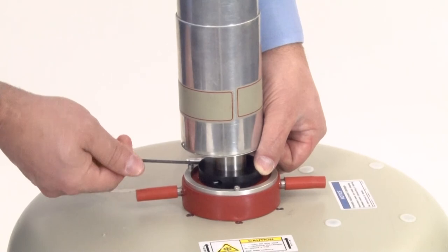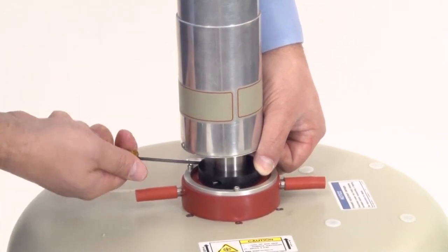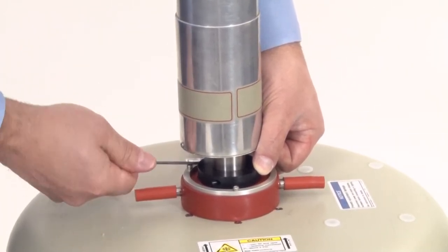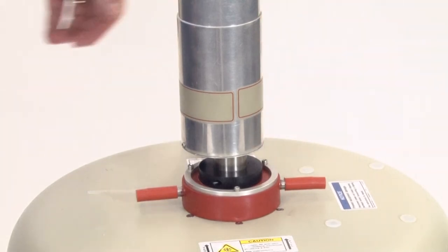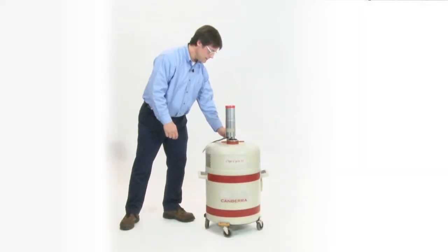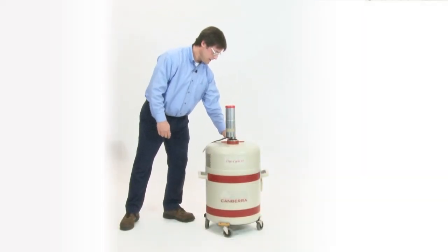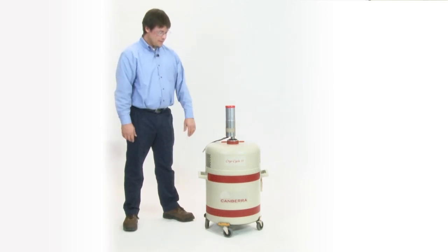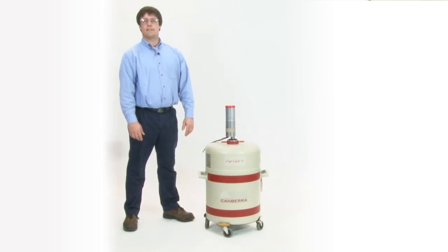The reason you take it off the bottom of the dewar is there's vibration associated with the cooler. And if the dipstick is touching the bottom of the dewar, the vibration will transfer to the dipstick and it might cause microphonics. So last thing you need to do is plug your vent plug back in. So there we have it, a fully installed collar and dipstick.